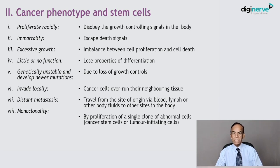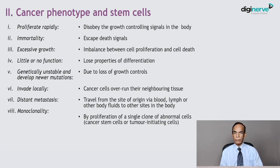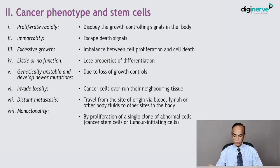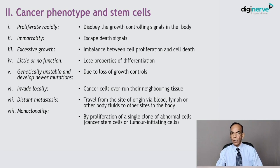Tumor cells in cancers arise from stem cells. This has long been known for hematopoietic malignancies, where tumor cells arise from hematopoietic stem cells in the bone marrow. Stem cells have now been described in other cancers as well. There is a monoclonal proliferation of tumor cells — a single clone of abnormal cells formed from stem cells or cancer-initiating cells — which gives rise to the next progeny of abnormal, genetically unstable tumor cells. This is a fundamental and important feature of tumors.